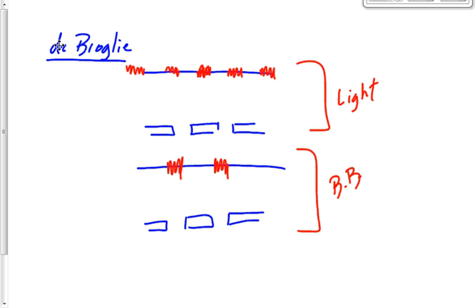When we fire electrons through these holes one at a time, as long as we're not observing them, then these electrons will behave like the light does. They will interfere with themselves. The electrons must therefore behave like waves. If they're going to produce an interference pattern, which is a property of waves, then these electrons must be waves.